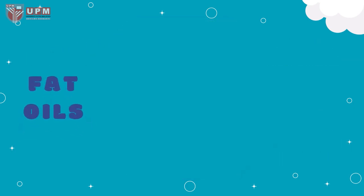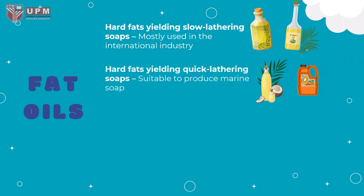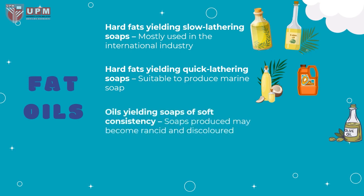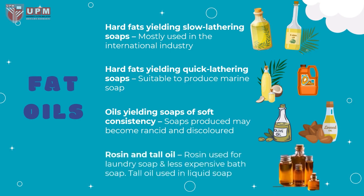There are four types of fats and oils that can be used according to the soap products they yield. First, hard fats yielding slow lathering soaps, made from vegetable oil or palm oil, mostly used in the international industry. Second, hard fats yielding quick lathering soaps, usually made from coconut oil and palm kernel oil, suitable to produce marine soap. Next, oils yielding soaps of soft consistency, made from olive oil or linseed oil, that may produce rancid and discolored soap. Lastly, rosin and tall oil — rosin is usually used to make laundry soap and less expensive bath soap, while tall oil is used in liquid soap.